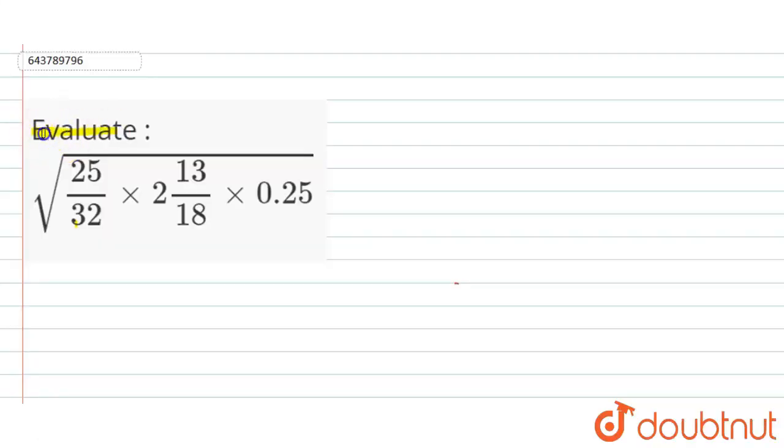We have to evaluate: square root of (25/32) times 2 times (13/18) times 0.25. Now let's see the solution.